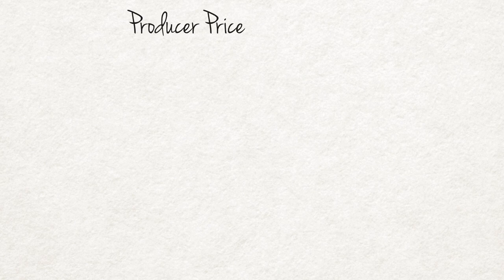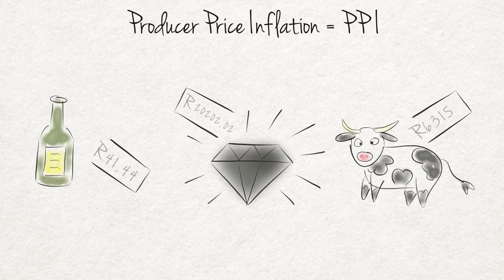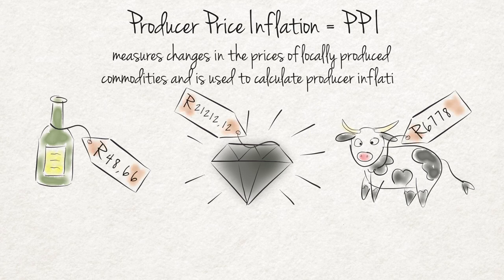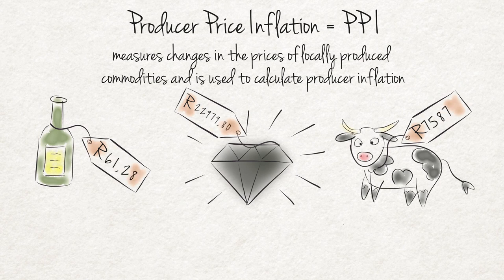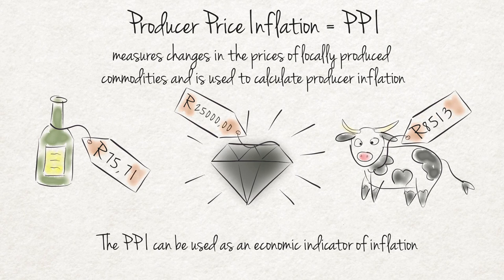Producer Price Inflation. The Producer Price Index, or PPI, measures changes in the prices of locally produced commodities and is used to calculate producer inflation. In general terms, it can be defined as the price of goods as they enter or leave the factory gates. The PPI can be used as an economic indicator of inflation, and it can also be used to adjust payment amounts stipulated in contracts that run over many years to take account of price increases.